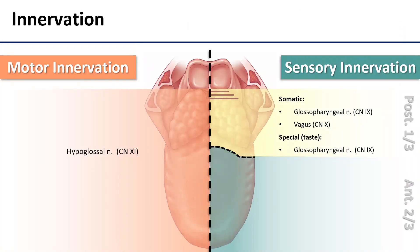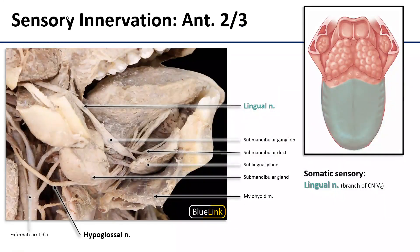The anterior tongue gets somatic sensory innervation from the same source as the rest of the inferior oral cavity: the lingual nerve. The lingual nerve is a branch of the mandibular division of trigeminal. It originates in the infratemporal fossa deep to the mandibular ramus, travels anteriorly and inferiorly into the oral mucosa beneath the tongue, and is attached to the submandibular ganglion — where parasympathetics from the facial nerve synapse to reach the submandibular and sublingual glands. It then wraps underneath the submandibular duct and innervates the tongue from inferiorly.